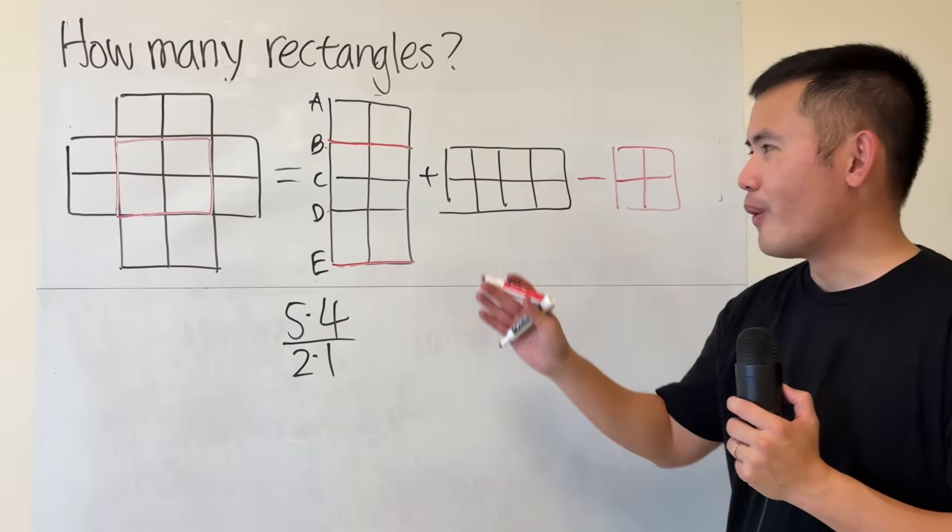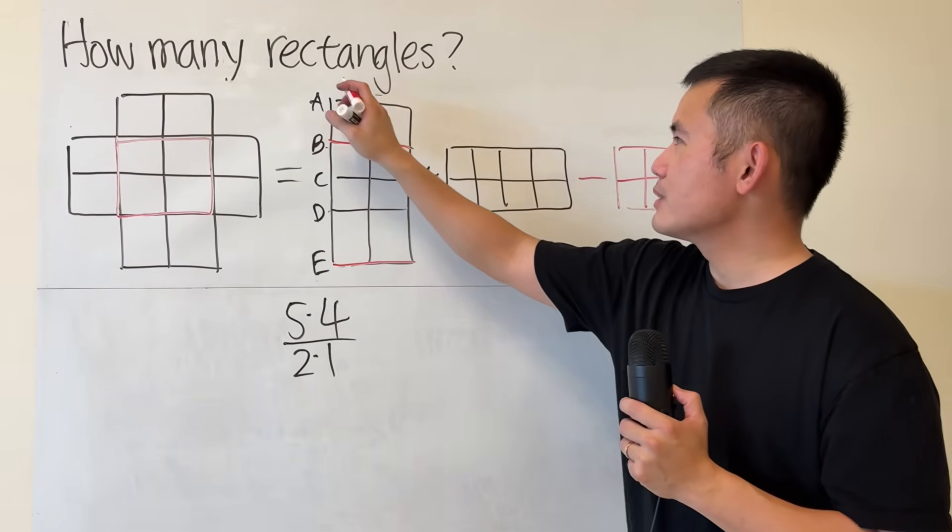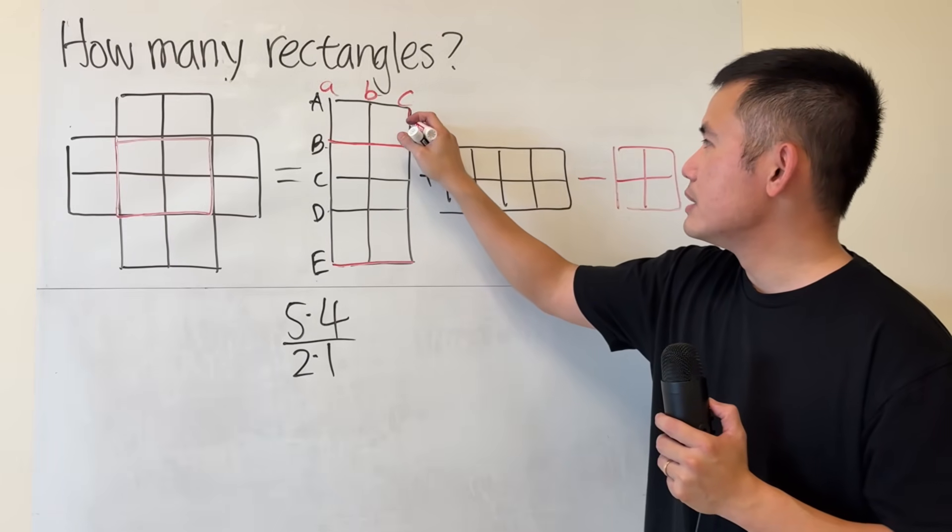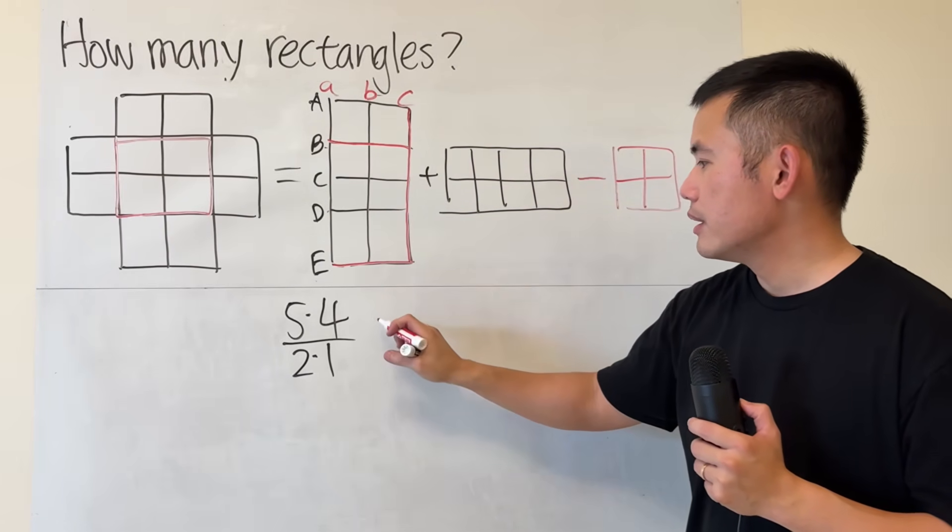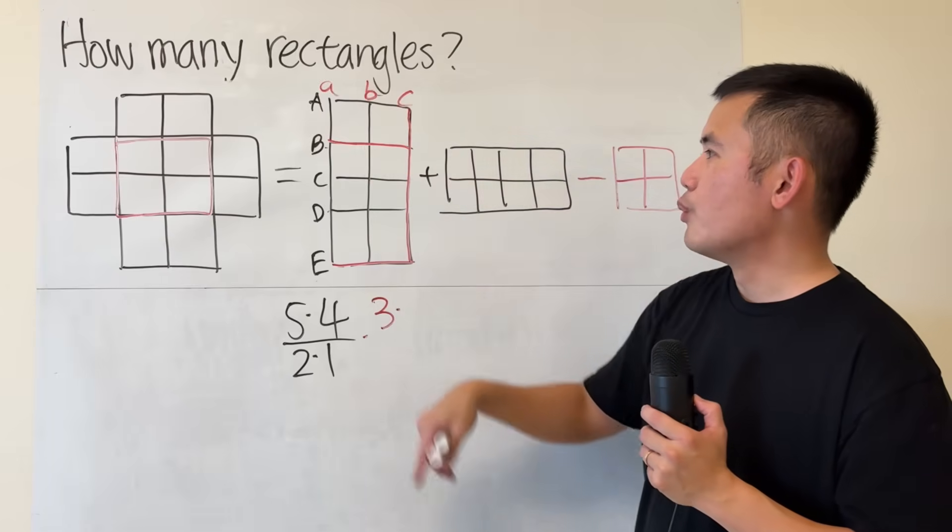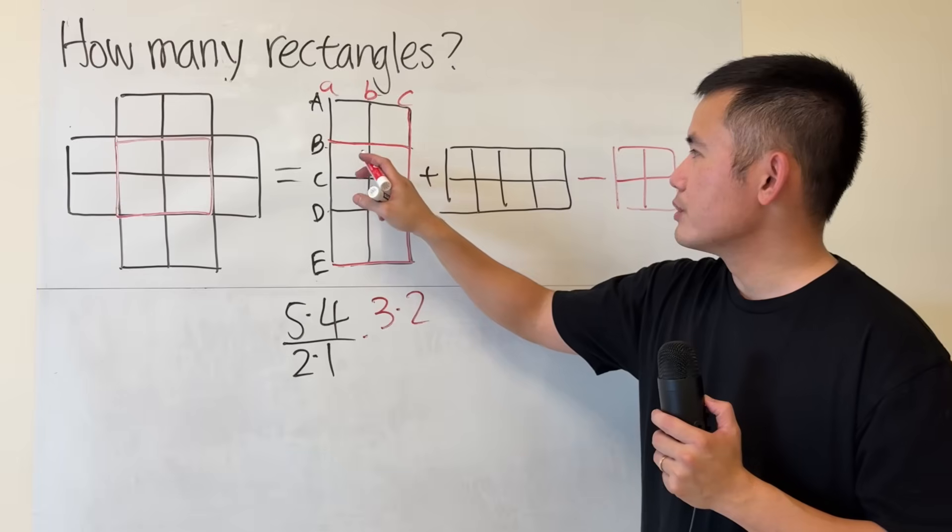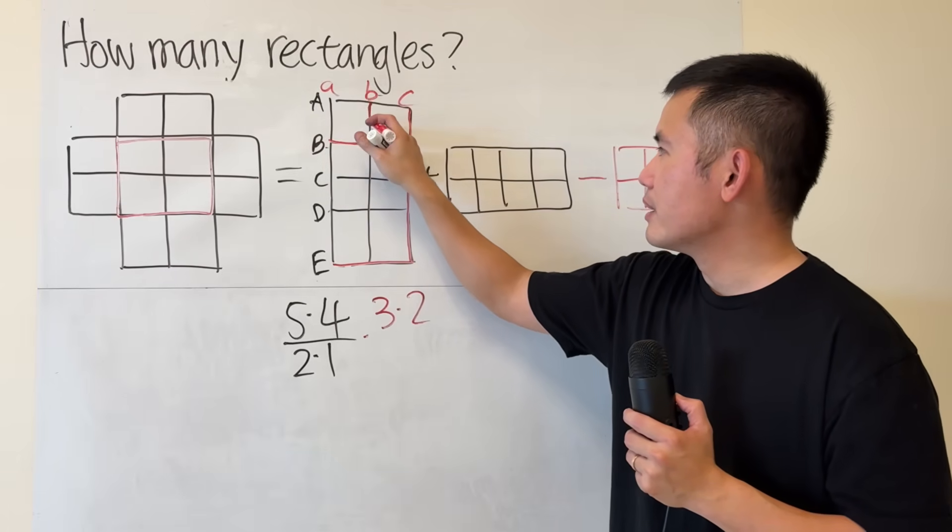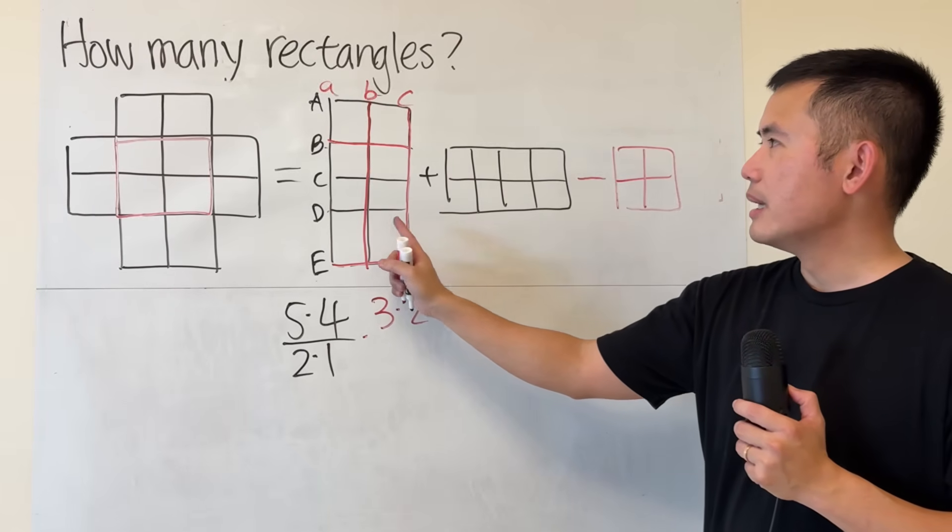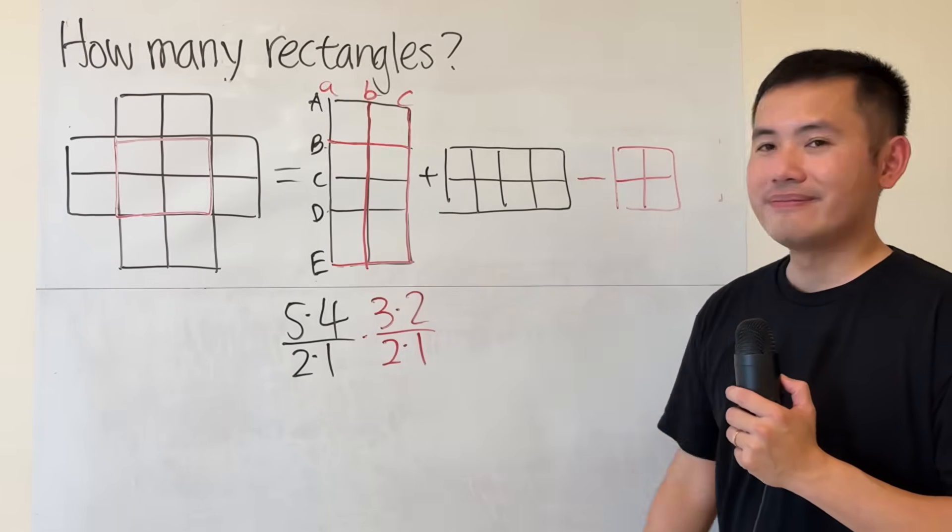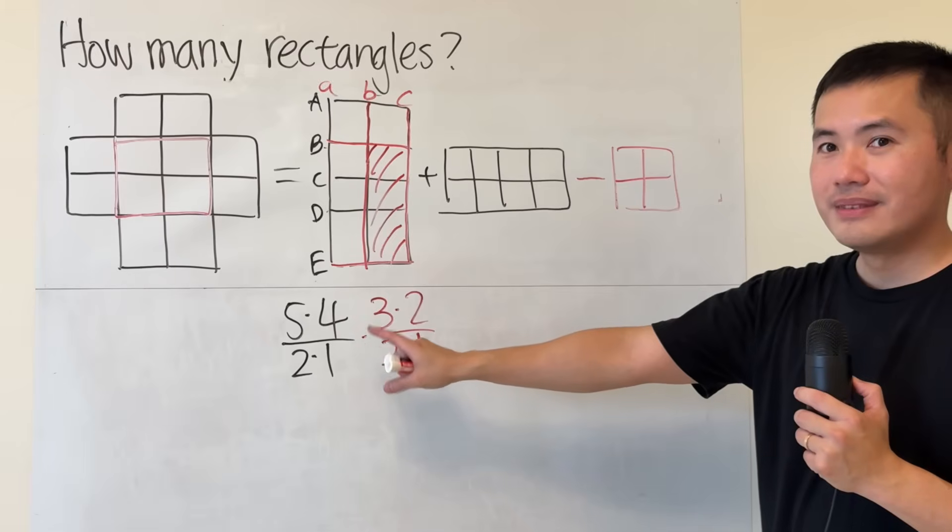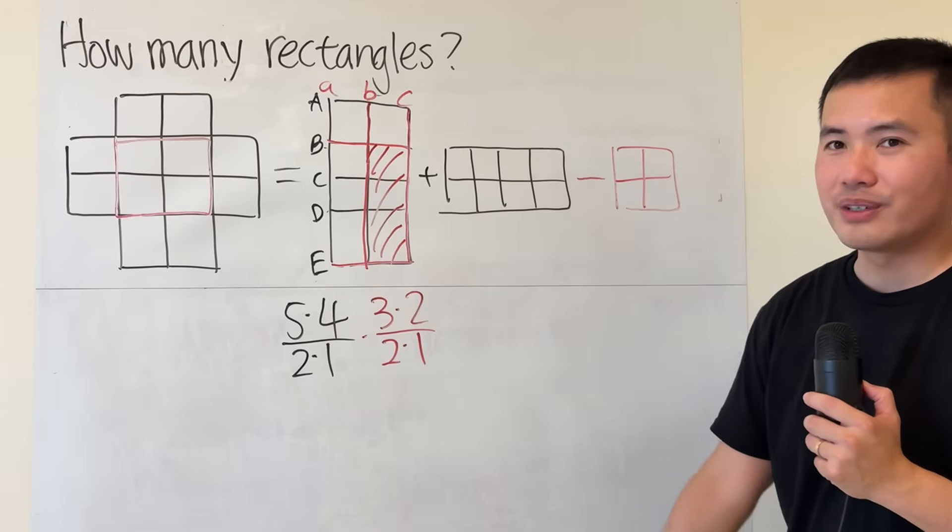This will give you the number of ways to choose two lines horizontally. Now, we just have to do the same thing for the vertical lines. For the vertical lines, we have little a, little b, and little c. We have 3 choices to pick for the first one. I'm going to say I choose c first, like so. And, remember, it is 3 choices for the first line. And, then, once we have that, we have 2 more. So, just multiply by 2. And, I'm going to maybe pick b right here. Okay. Same thing. Two lines by the order of how we select. B or C doesn't matter. So, divide it by 2 and 1. Now, once we have done that, this is the rectangle that we are talking about. This gives you the number of ways to select the rectangle from this picture.